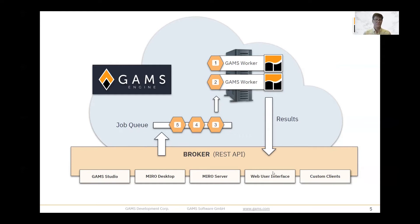The jobs are submitted to the broker and put into a queue where they're eventually assigned to a GAMS worker. These workers are the third main component of the system. Multiple workers can run on a single machine, or they can run on individual or multiple machines.